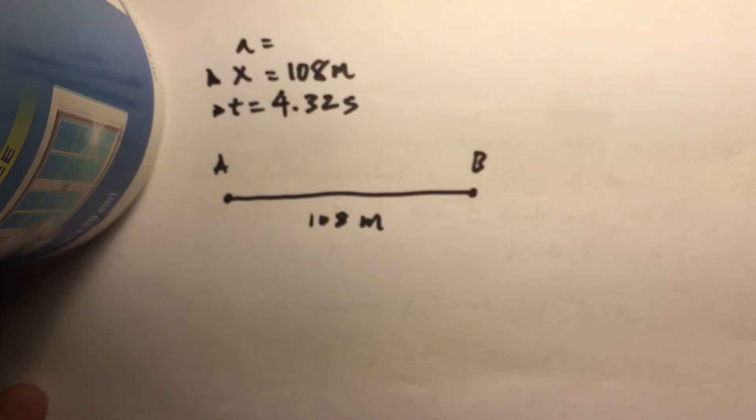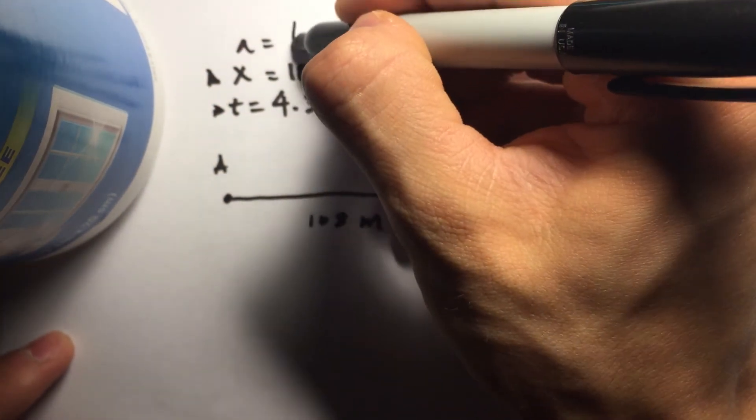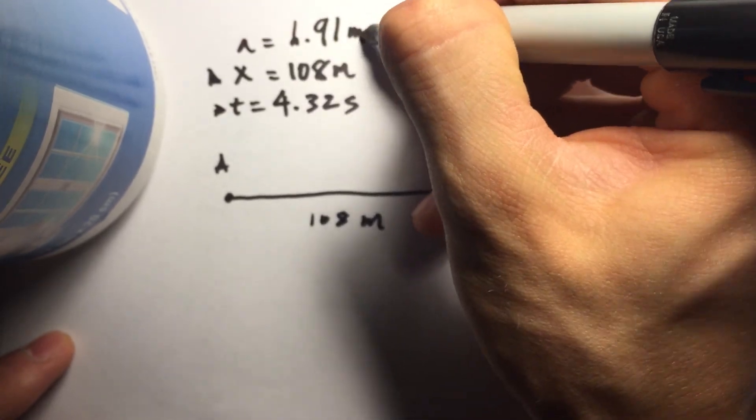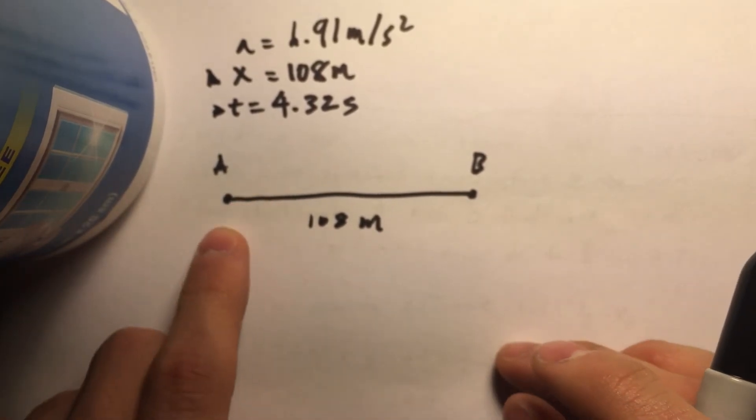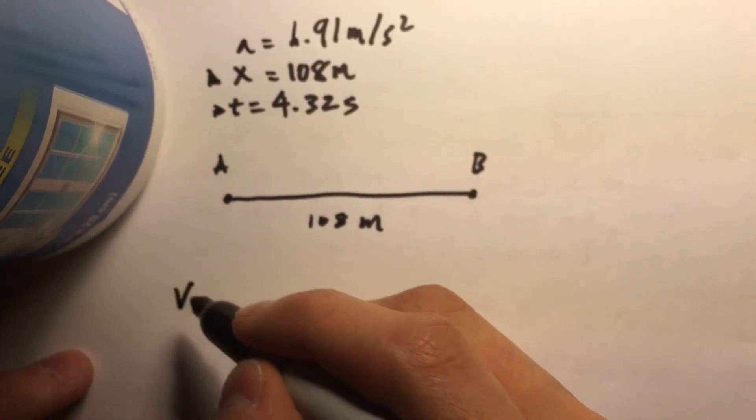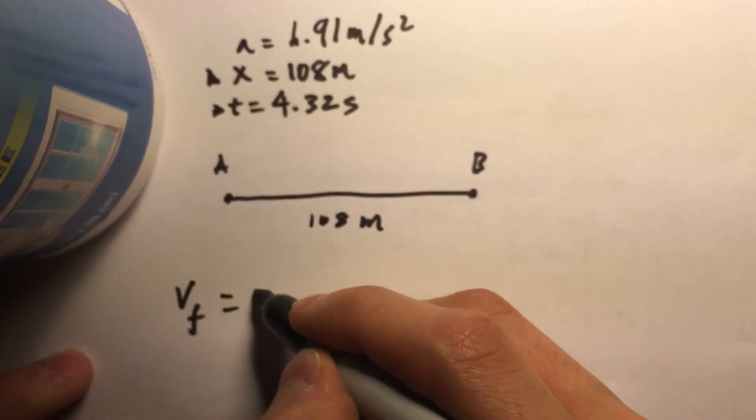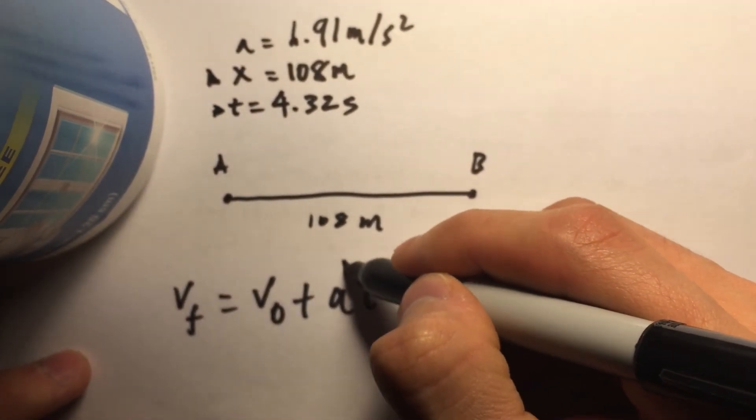Acceleration we have given as 6.91 meters per second squared, and that's also given in the problem. Now we know that we're going to be solving, if we look at our kinematics equations, we have this equation V final equals V naught plus AT, or delta T if you want to call it.